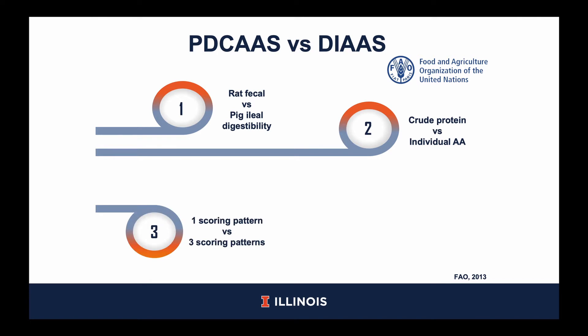Thirdly, PDCAS uses one reference scoring pattern for children 2–5 years of age, whereas DIAAS uses three reference scoring patterns: one from birth to 6 months, 6 months to 3 years, and one for children older than 3 years, adolescents, and adults. Now, although DIAAS has become more specific in its reference patterns, it still fails to recognize the different amino acid requirements for pregnant and lactating women, the elderly, and the malnourished population.